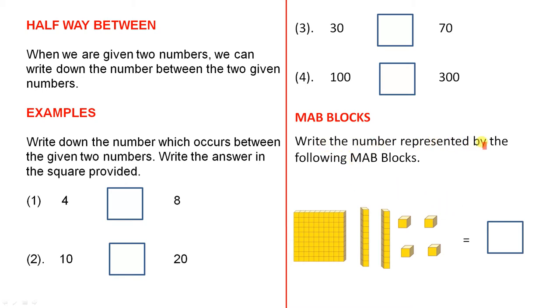Here's a simple example. Write the number represented by the following MAB blocks. Now all you have to remember is this flat here, that represents 100. Each of these represents a 10 and each of these represents a 1. So you can then work out what the answer is and write it in that square.